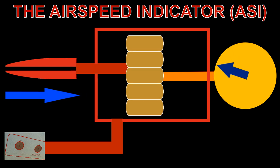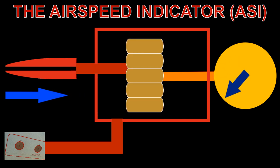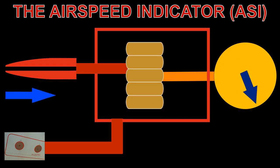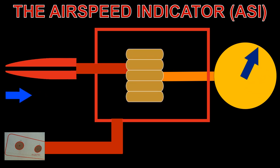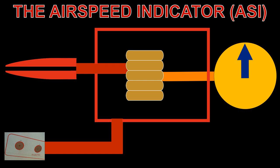Conversely, as the airspeed decreases, the total pressure decreases, which in turn contracts the diaphragm, which turns the pointer to the lower speed. The ASI is checked before takeoff for a zero reading, and during takeoff that it is increasing appropriately.